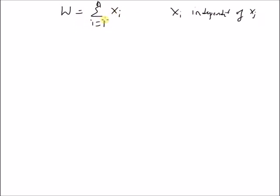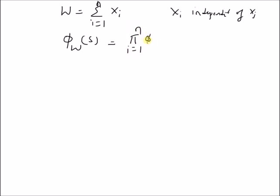Given this set of random variables, we want to prove that the moment generating function of W, phi_w(s), is equal to the product of the moment generating functions of the individual random variables: the product from i=1 to n of phi_x_i(s). That is our goal.